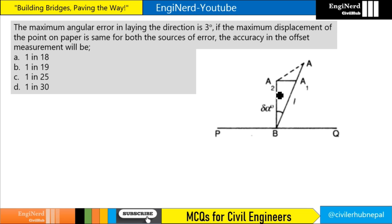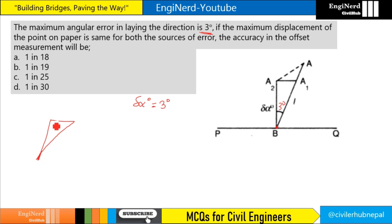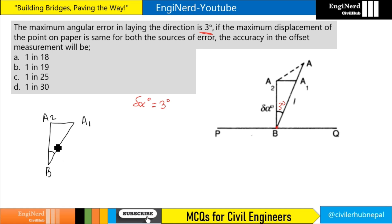Let's see this figure. In this figure, the maximum angular error in laying the direction is 3 degrees, so this angle del_alpha equals 3 degrees. Let's draw this figure: this is point B, this is a2, this is a1, and this angle is del_alpha. This length from here to here is L — due to angular error we measured L.